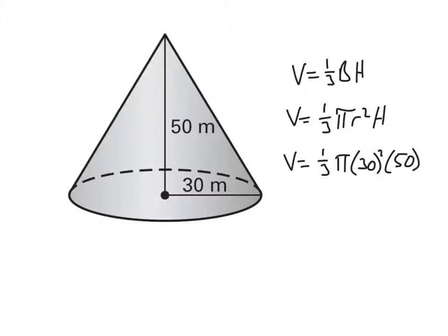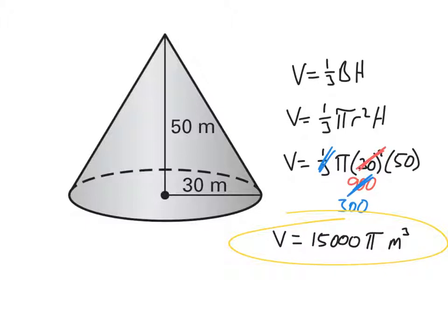Okay? So you have to take 30 squared, which is 900. And then you can take one-third of 900 to get 300. And then 300 times 50 is going to give us our volume of 15,000 pi cubic meters. All right. Questions on the cone? No. Let's go to the back.